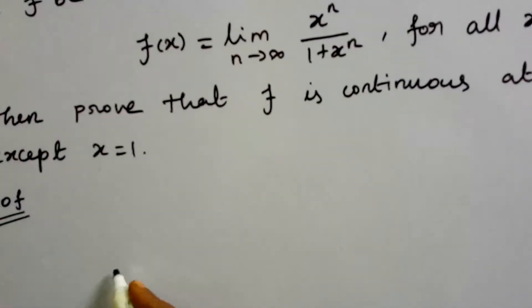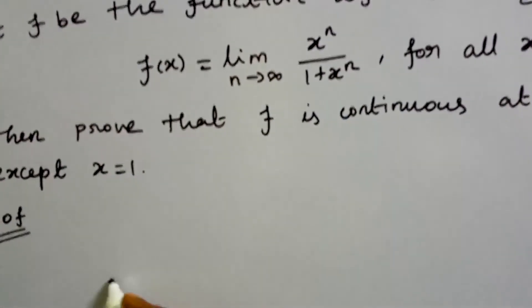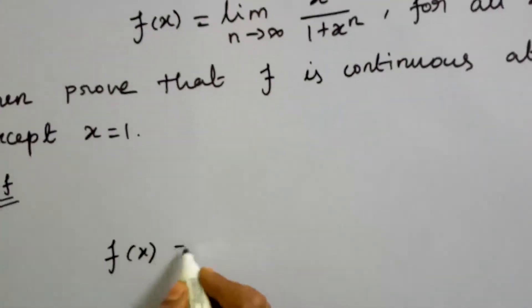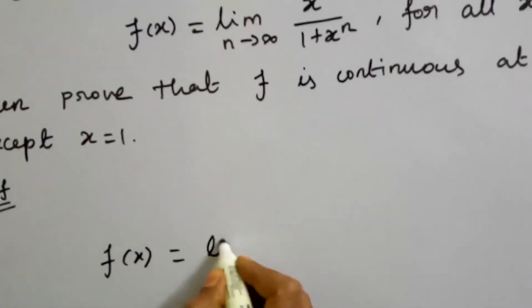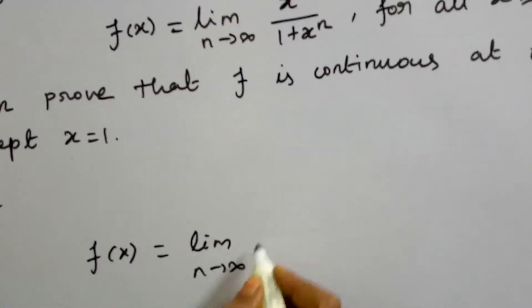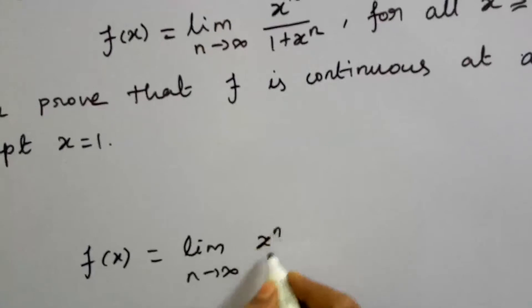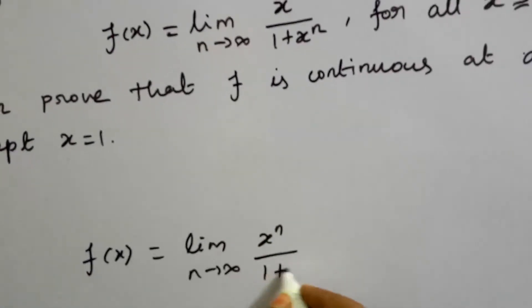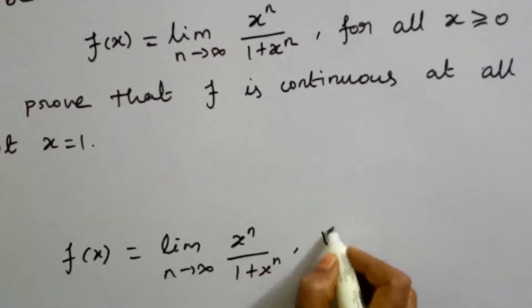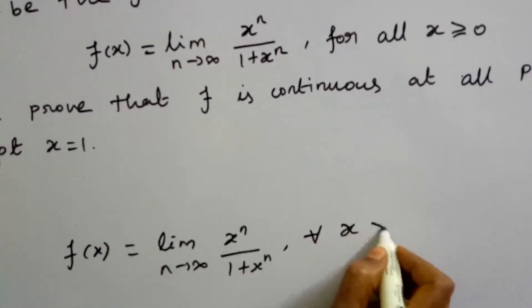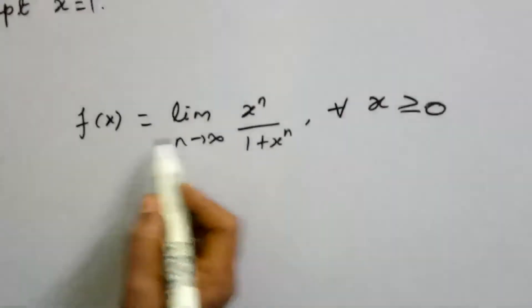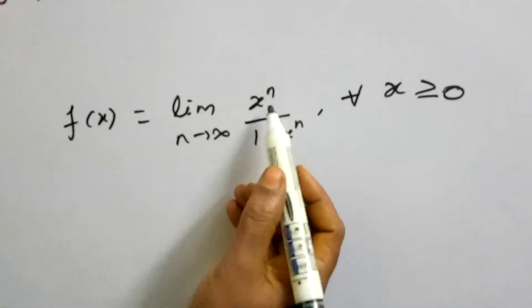Given function: f(x) = lim(n→∞) xⁿ/(1 + xⁿ) for all x ≥ 0. That is, the given function is defined in terms of x and n.